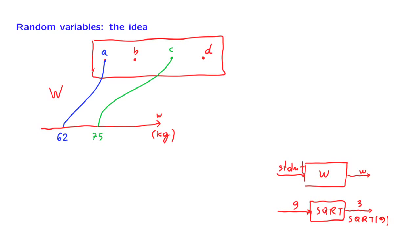Notice here the distinction that we will keep emphasizing over and over. The square root of 9 is a number — it's the number 3. The box 'square root' is a function.